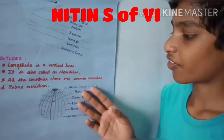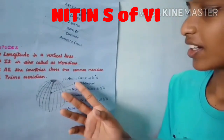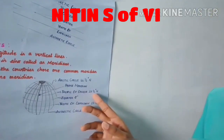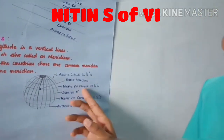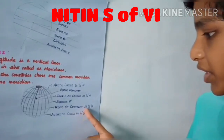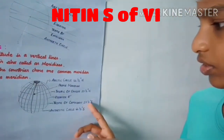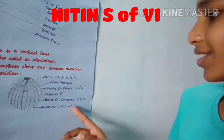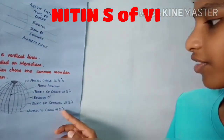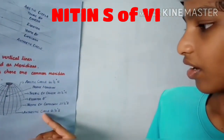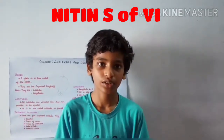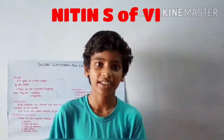66 and a half degrees north is the Arctic Circle. 23 and a half degrees north is the Tropic of Cancer. 0 degrees is the equator. 23 and a half degrees south is the Tropic of Capricorn. 66 and a half degrees south is the Antarctic Circle. These two imaginary lines are used to locate a place accurately.